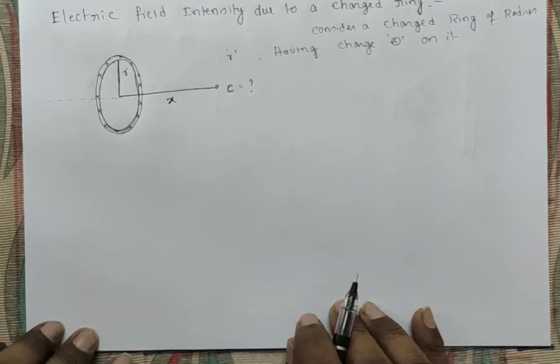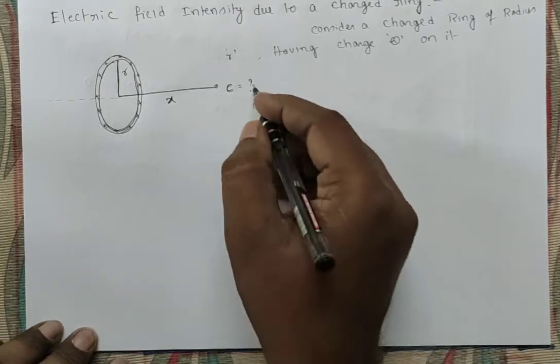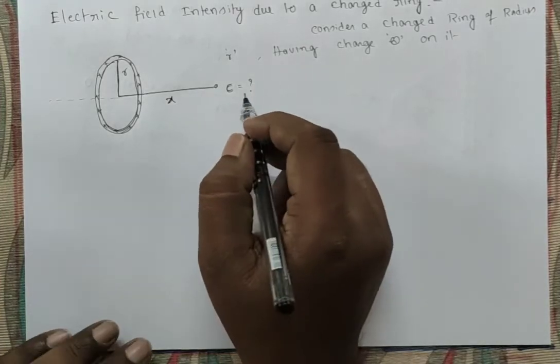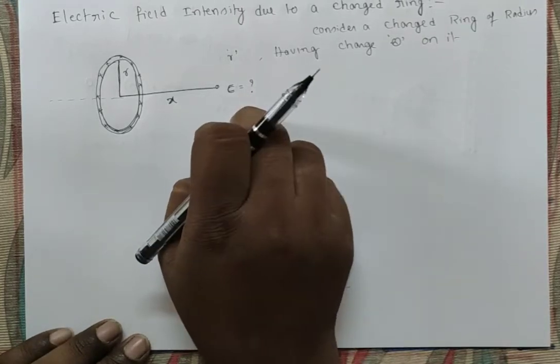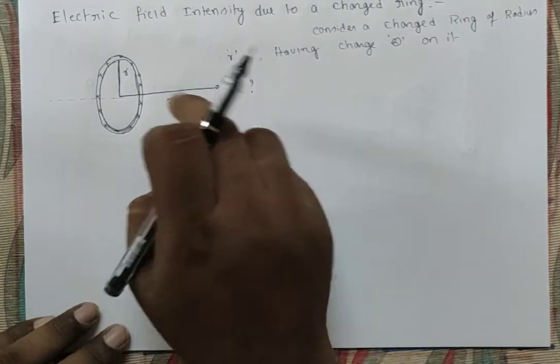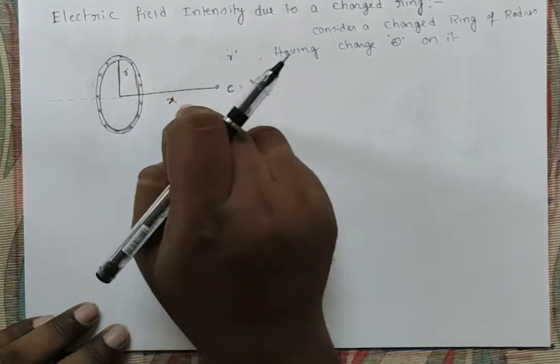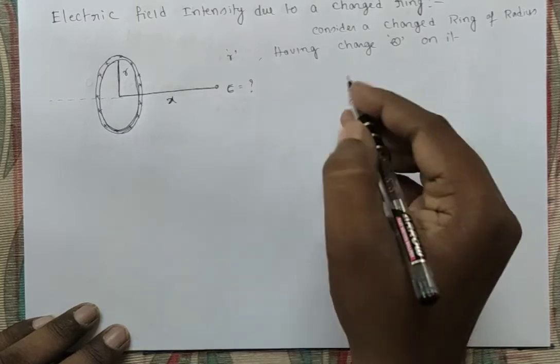We can directly take the expression for the electric field intensity. The electric field intensity at this point: the radius is R, Q is the charge, and X is the distance.